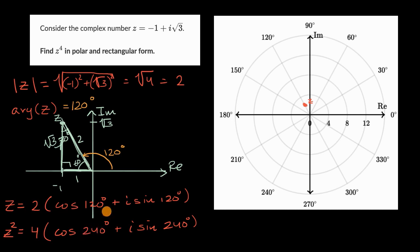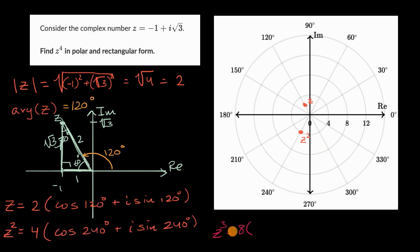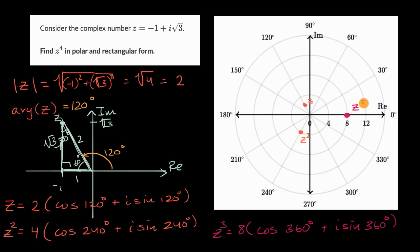So where does z squared sit? Its argument is 240 degrees and its modulus is four, so it is twice as far from the origin. Now, what is z to the third power? That's z squared times z again, so we multiply the modulus by two, giving eight. Then we rotate z squared by another 120 degrees — cosine of 360 degrees plus i sine of 360 degrees. That gives us a modulus of eight, and 360 degrees is the same as zero degrees, so z cubed is right over here.